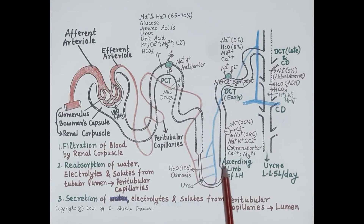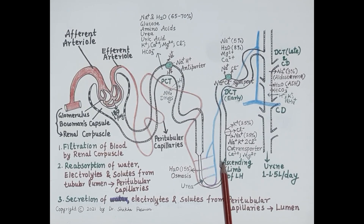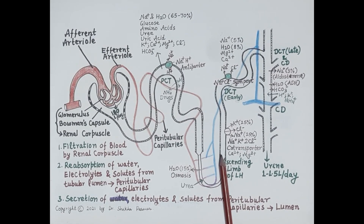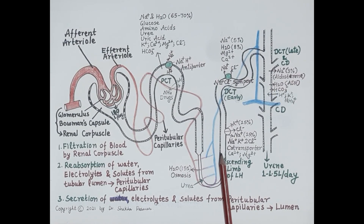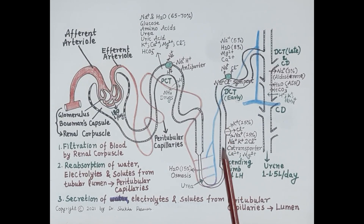We can say that by this point the majority of solutes filtered by the glomerulus have been reabsorbed, along with the majority of water — around 80 to 85 percent — by the end of the loop of Henle.